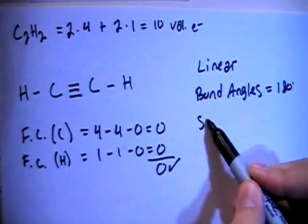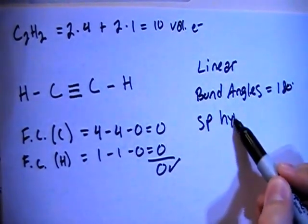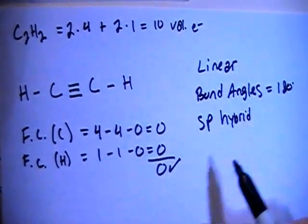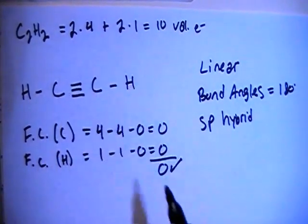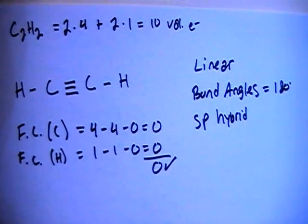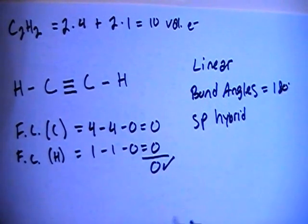The hybridization is going to be sp-hybrid for the hybrid orbitals because each carbon has one, two bonding sites. So that means sp-1s, 1p orbital, so sp-hybrid.